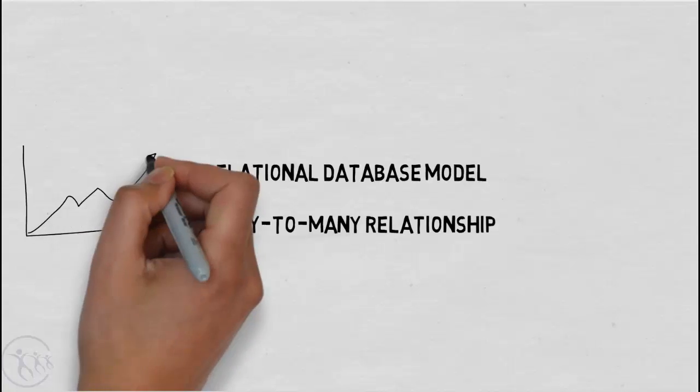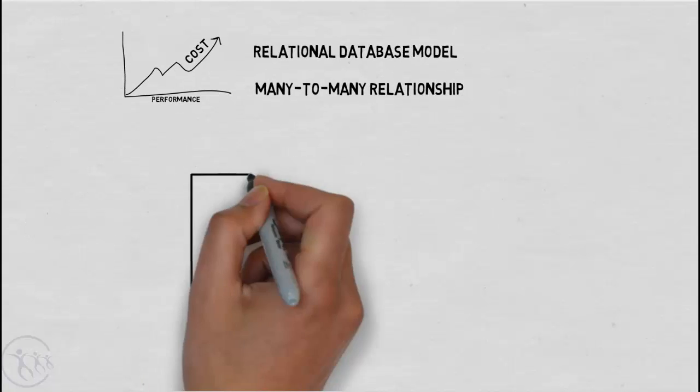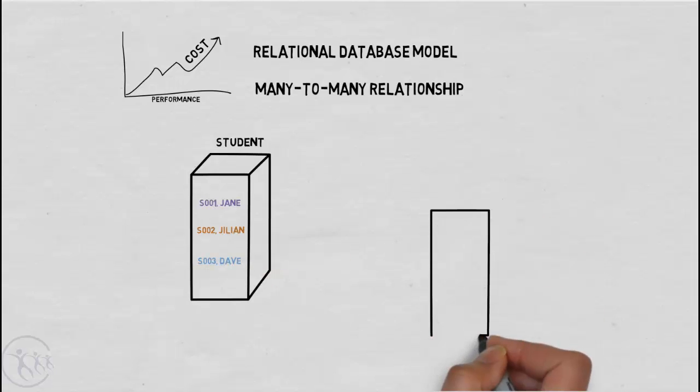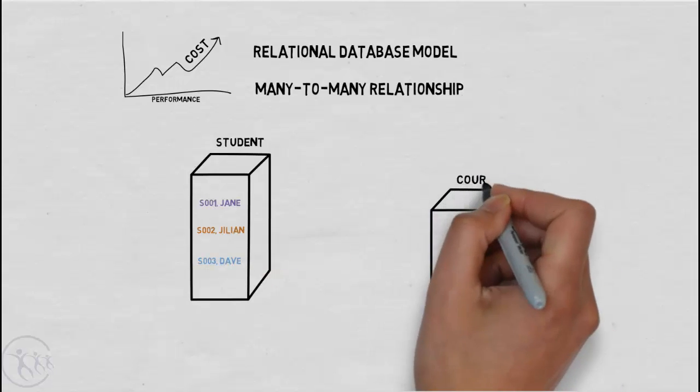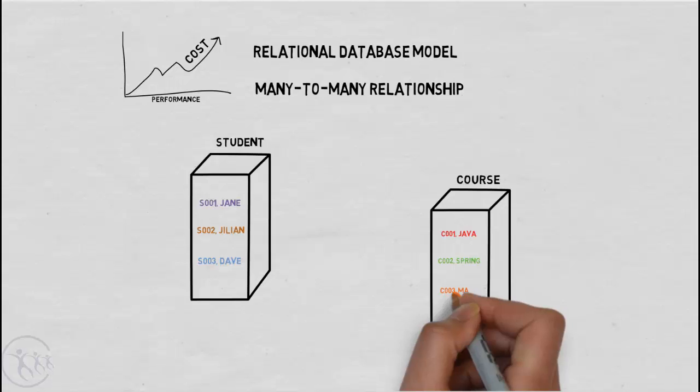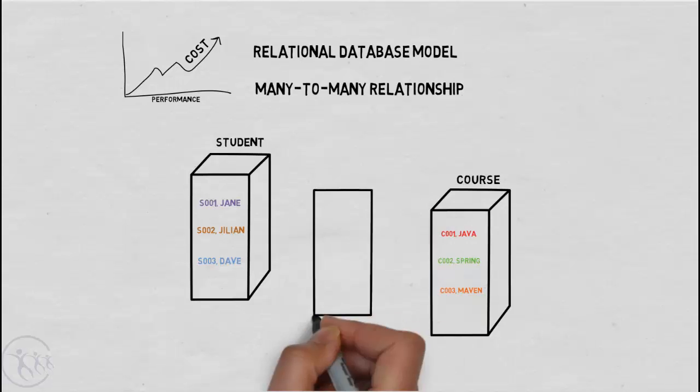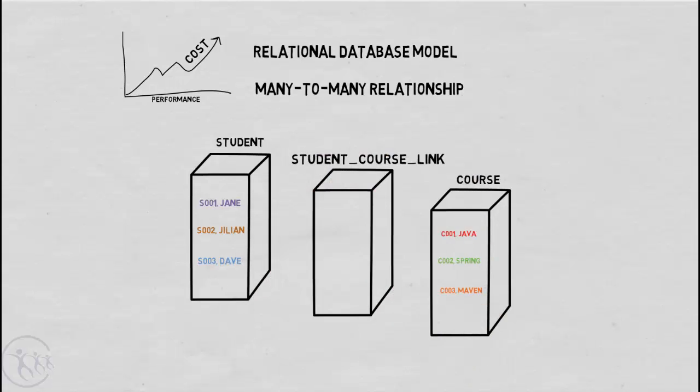In the relational data model, one of the most costly joins to create is the many-to-many. In this example, we have a student table and a course table. We can't join the two tables together directly. We need to create a separate table, sometimes known as a link table.